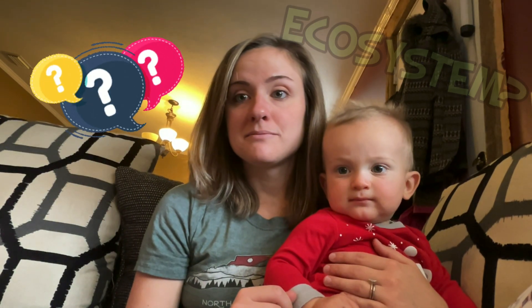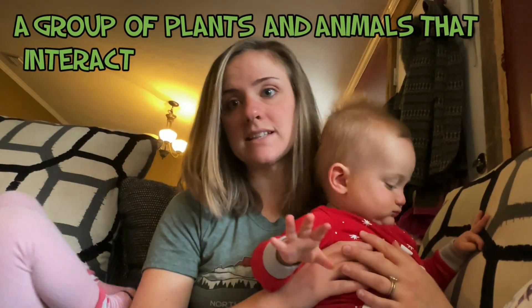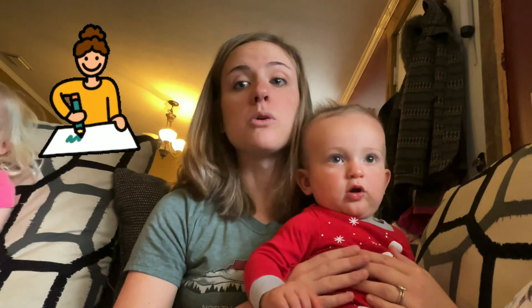So what's an ecosystem? An ecosystem is a group of plants and animals that interact in their environment together. So we are going to start by drawing an environment, or a pond, and then add our plants and animals.